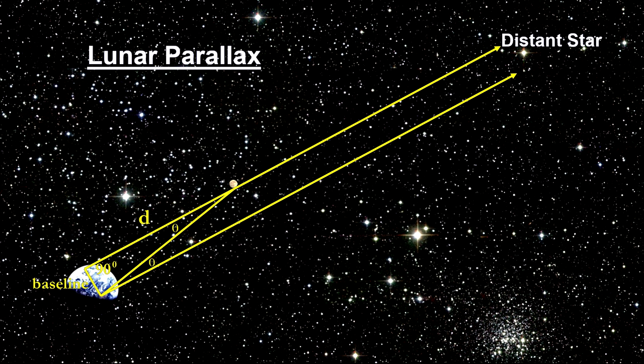Measure the angle between these two lines. In our example, it's approximately 1 degree. This is the parallax. Note that this line to the Moon crosses two parallel lines drawn out to the distant star. From simple geometry, we know that the parallax angle theta is also the angle between the two lines at the Moon.